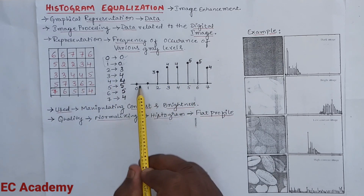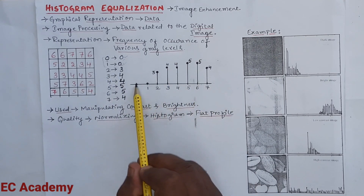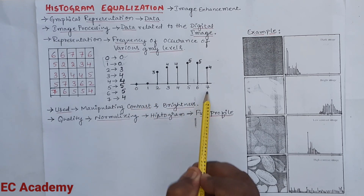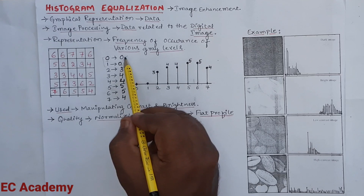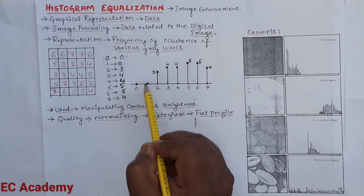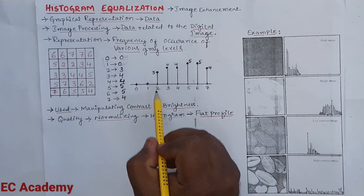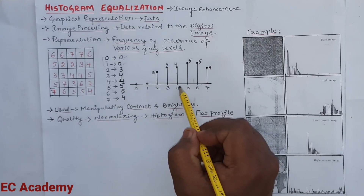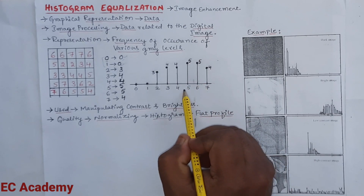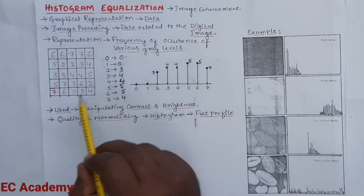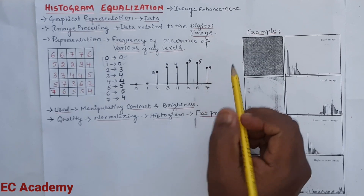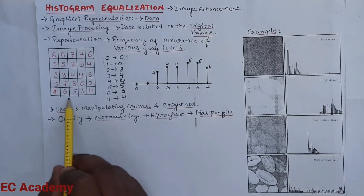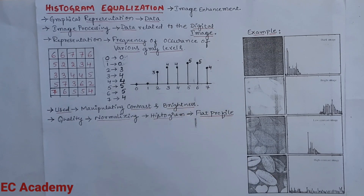To represent the histogram, we take an x-axis with different gray level values from 0 to 7. Gray levels 0 and 1 have a value of 0. Gray level 2 has occurred 3 times, 3 has occurred 4 times, 4 has occurred 4 times, 5 has occurred 5 times, and 7 has occurred 4 times. This is the histogram representation of the given digital image.